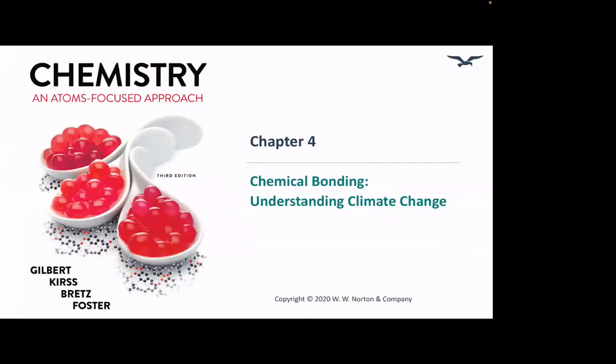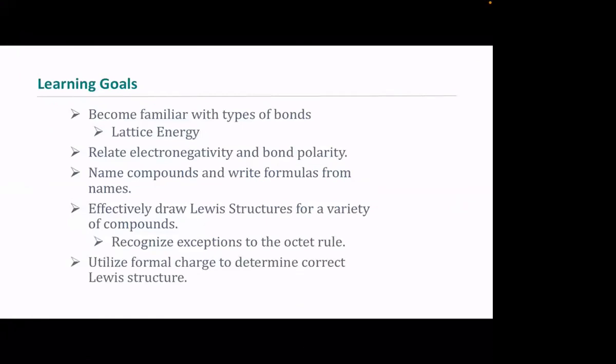We're covering chemical bonding. As an environmental chemist, I'd love to spend more time on climate change, but there isn't much time. Our learning goals are: become familiar with types of bonds and lattice energy, relate electronegativity and bond polarity, name compounds and write formulas, effectively draw Lewis structures for a variety of compounds, and recognize exceptions to the octet rule.